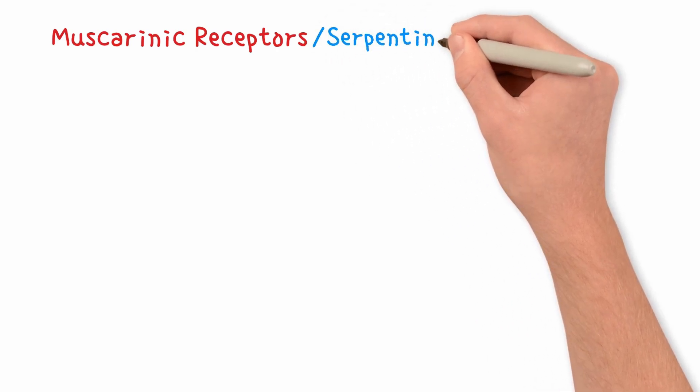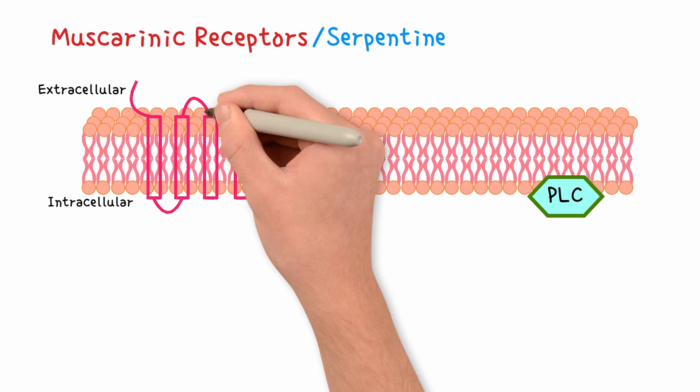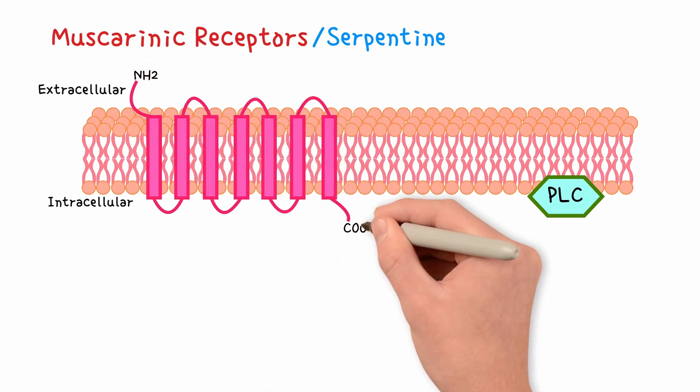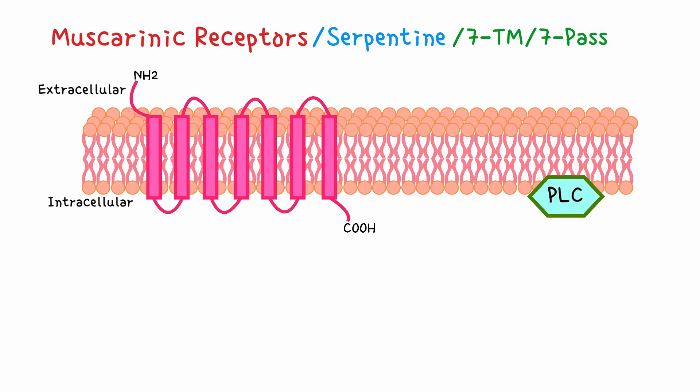Next, muscarinic receptors. They are also called serpentine receptors as they weave through the cell membrane like a snake. We have got two other names. Seven transmembrane, TM receptors, or seven-pass receptors. That's because they pass seven times through the membrane.